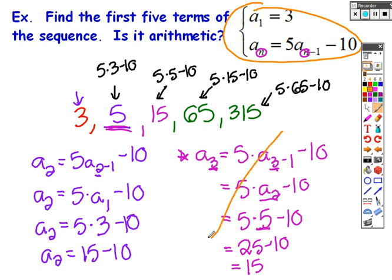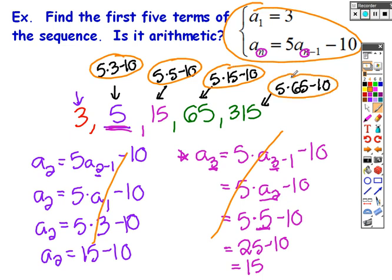If I looked at this recursive formula I probably wouldn't go through all that work — I'd just track the pattern directly. Now, is this sequence arithmetic? I would say no. If I look at the difference between terms: 5 minus 3 is 2, but 15 minus 5 is 10. I'm not getting the same difference between consecutive terms, so this is not arithmetic.